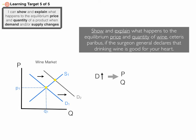Is the price higher or lower than before? It's higher — label it P2. So an increase in the demand for a product, all else being equal, ceteris paribus, is going to lead to an increase in the price of the product. More demand for a product, the price is going to go up. On the quantity side, brand new equilibrium quantity at Q2 — that's both quantity supplied and quantity demanded in equilibrium. It's to the right of the original, so it's an increase. More wine is going to be made and more wine is going to be bought and sold.